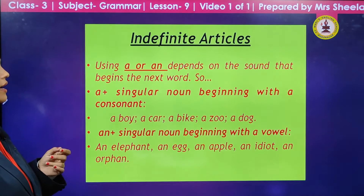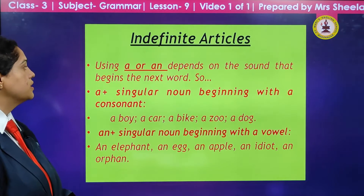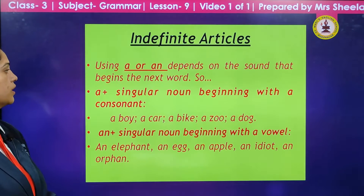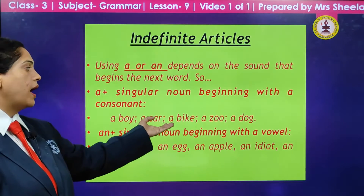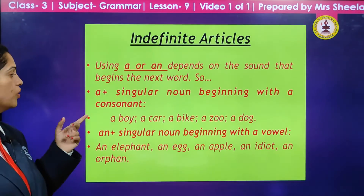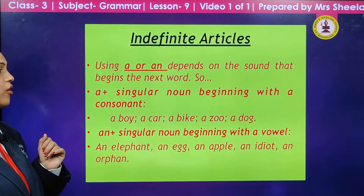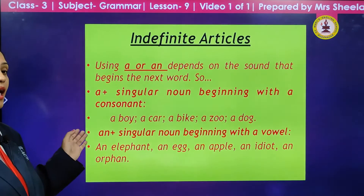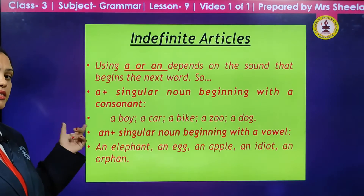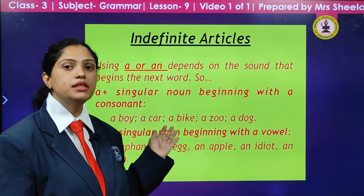A and an are indefinite articles. Using a or an depends on the sound that begins the next word. A is used with a singular noun beginning with a consonant: a boy, a car, a bike, a zoo, a dog — they all have a consonant sound, so we use the indefinite article a. An is used with a singular noun beginning with a vowel: an elephant, an egg, an apple, an idiot, an orphan — all having a vowel sound, so we use an before these words.